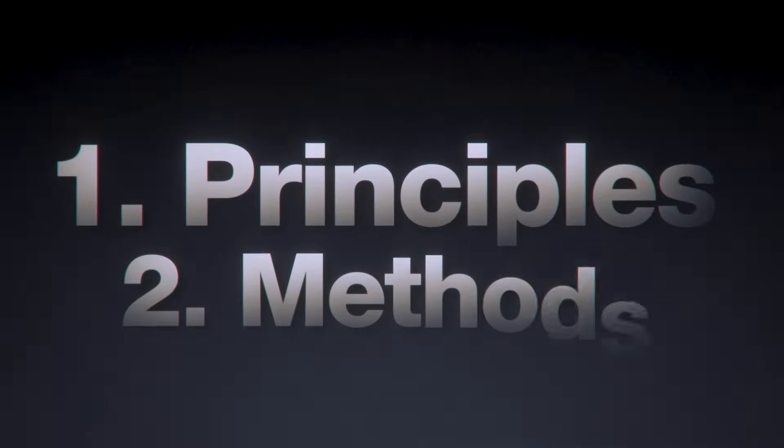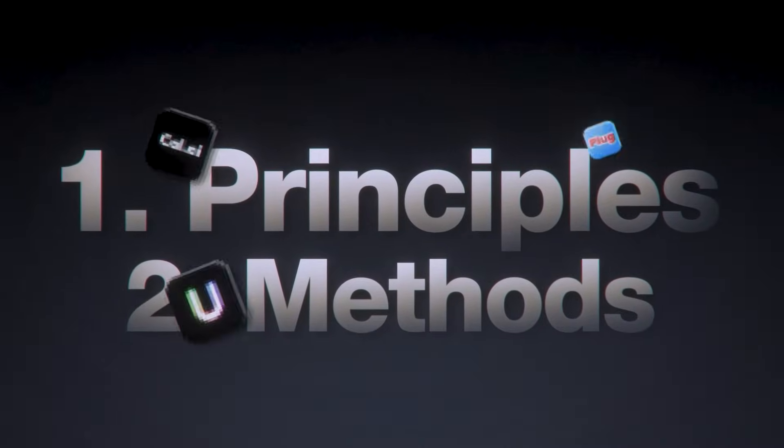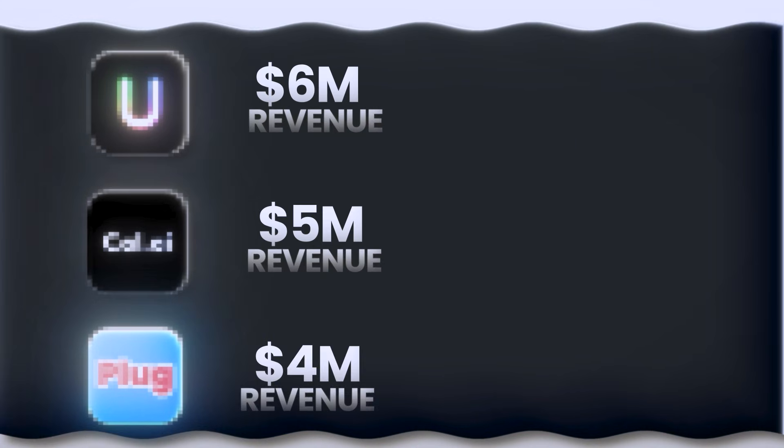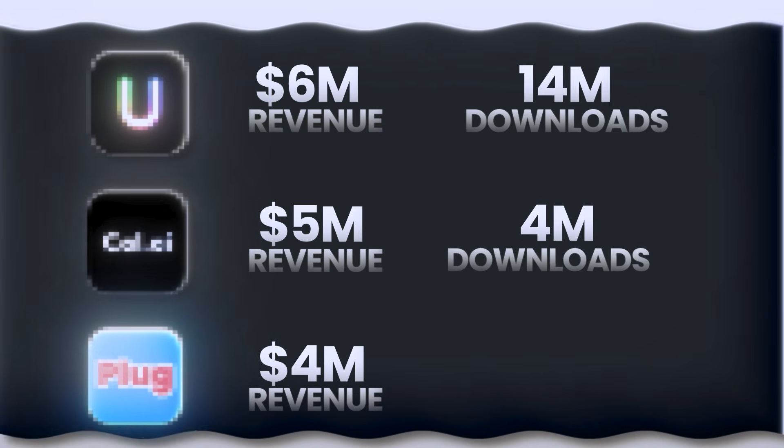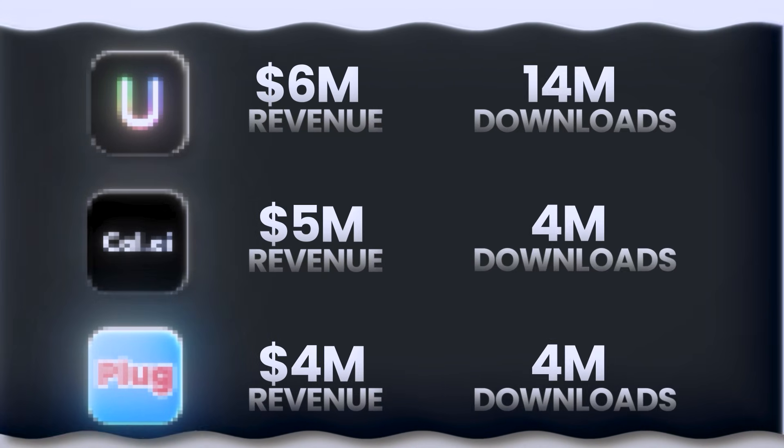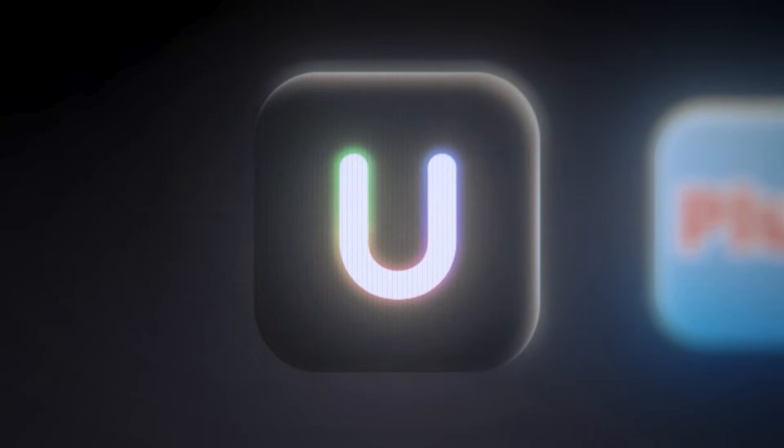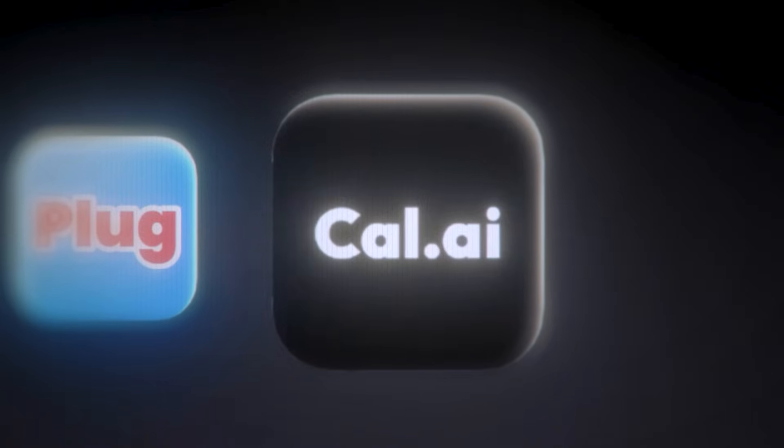This video is about the most important principles and methods for developing a viral app. My name is Blake Anderson, and I'm the first person to build three different mobile apps that have each generated millions in profit and millions in downloads in just one year. The apps I built are RizGPT, UMAX, and CalAI.